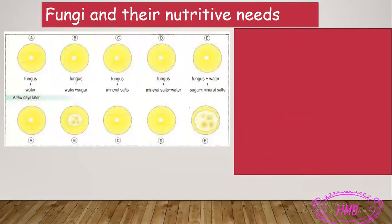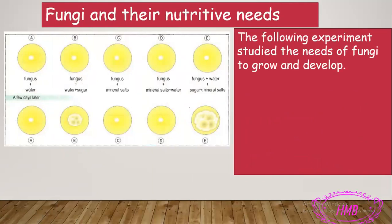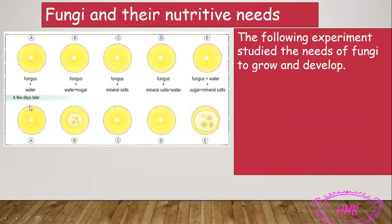Let's start with the first experiment to study the nutritive needs of fungi. We brought five petri dishes — culture areas where we can put fungi and let them grow. In dish A we put fungus and water; in B we added sugar to the water; in C we put only fungus and mineral salts; in D we put fungus, mineral salts, and water; and in E we put water, mineral salts, and sugar — the organic matter — to see if the fungus needed it.